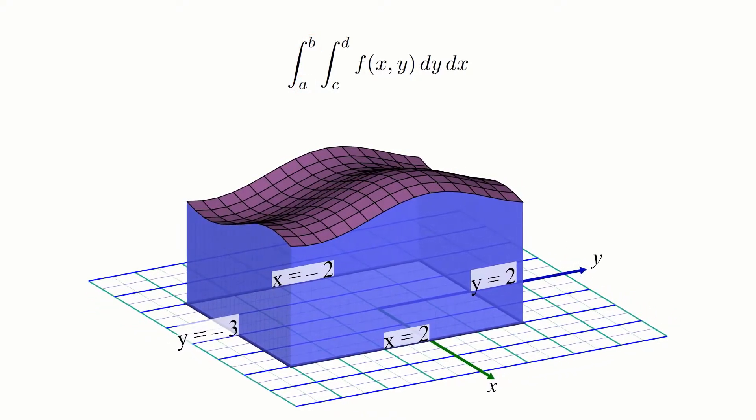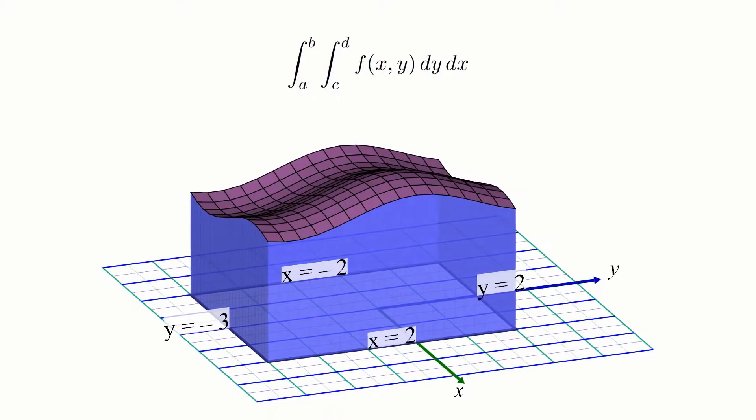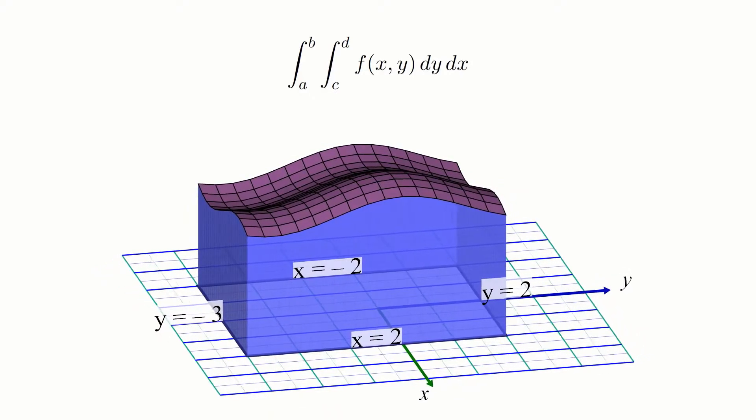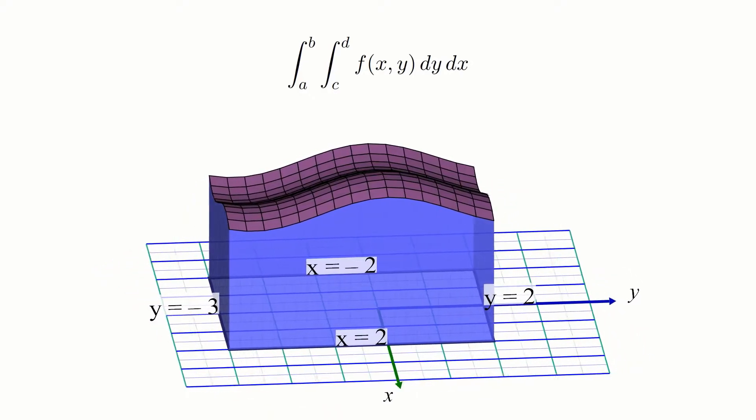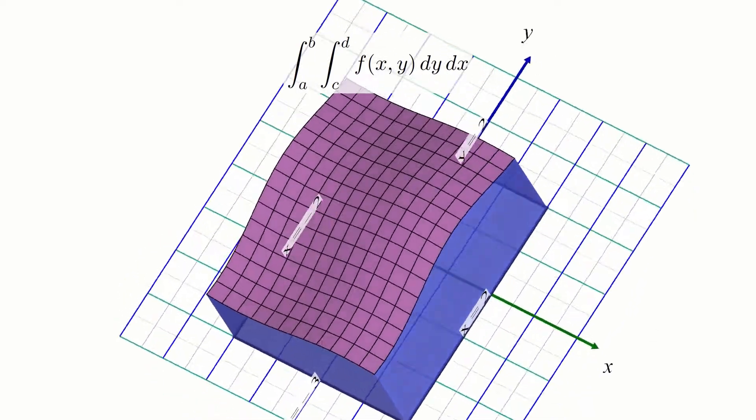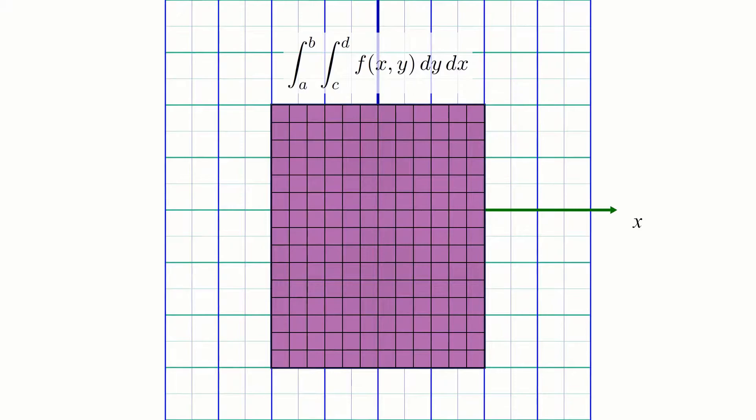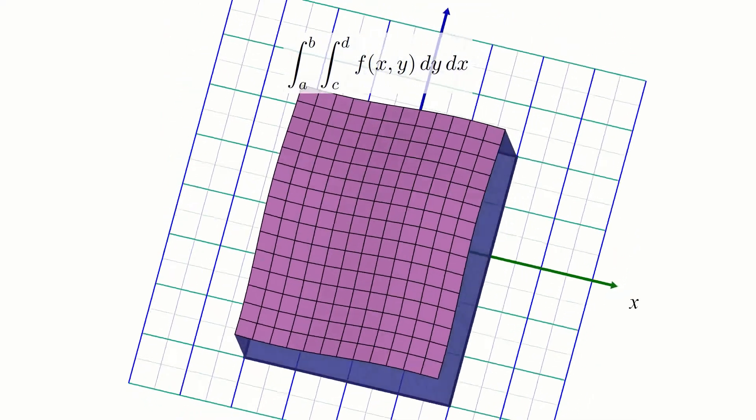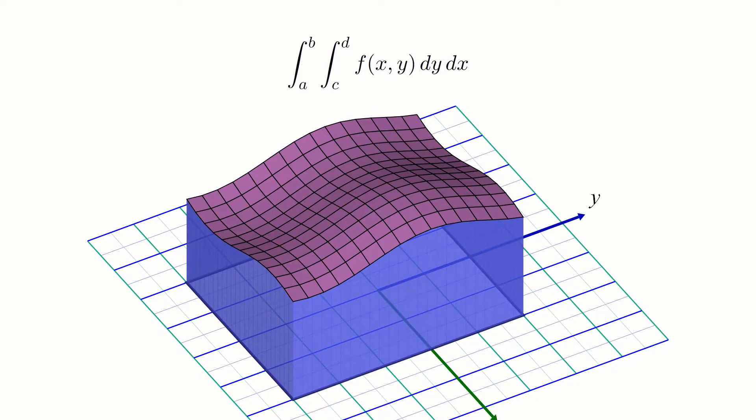Alright, so this works, but actually, it can sometimes happen that the bounds for these double integrals can be a bit more complicated. You see, using only constant bounds, a double integral can only sweep out solids whose base is a rectangular region of the xy-plane, restricting us to solids which look like a box with a curvy top.